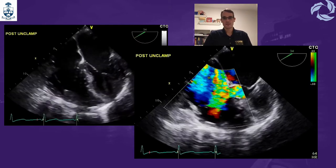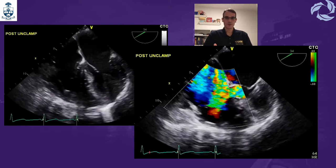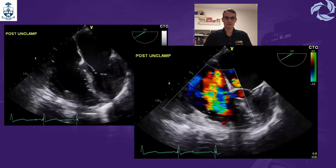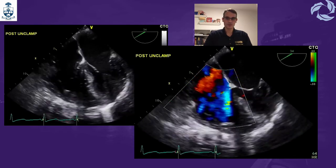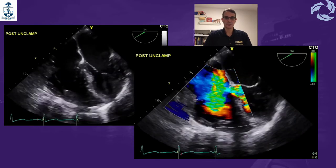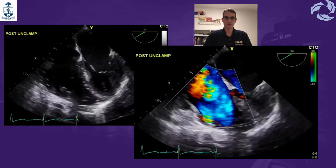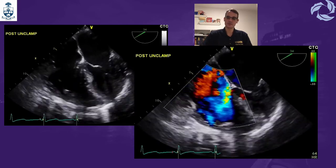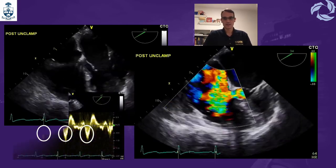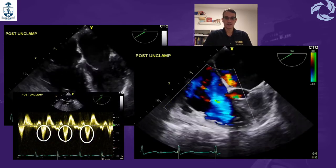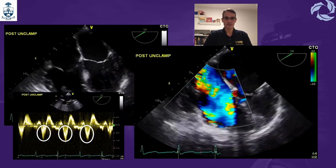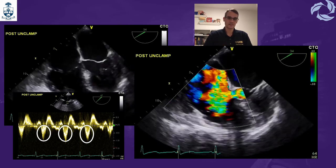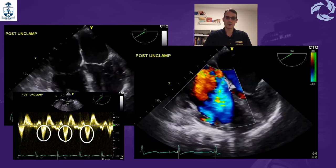Finally, you want to assess both ventricles after the clamp is released. Most importantly, you want to check how severe the TR is post-transplant to determine how it will impact the new liver. In our case, we still had severe tricuspid regurgitation with even more hepatic vein flow reversal.